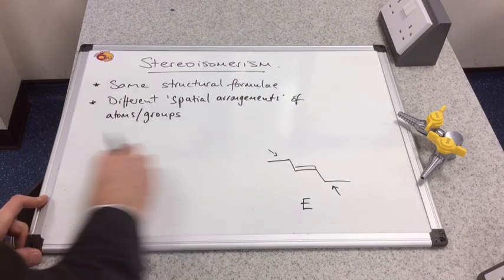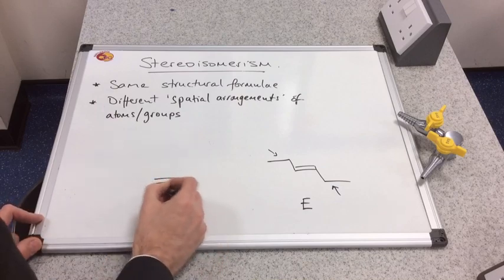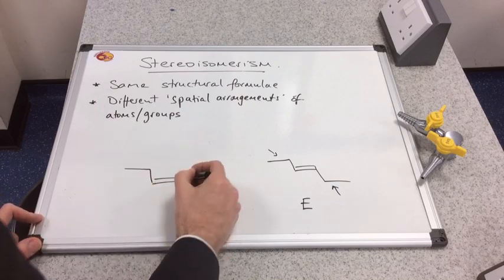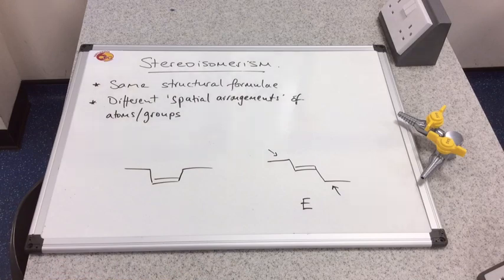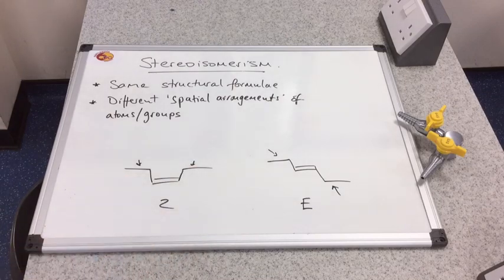What would the Z form look like? Well let's keep this in the same position. It would look like that. Priority groups on the same side of the double bond.